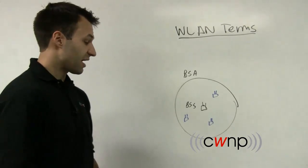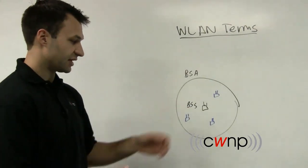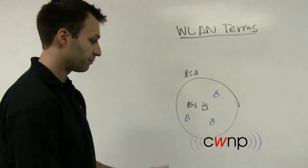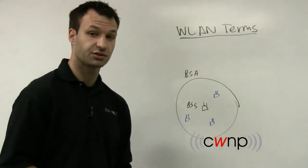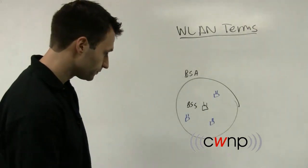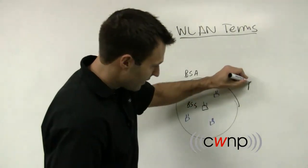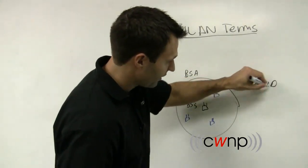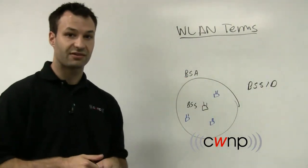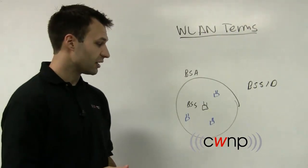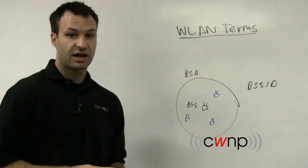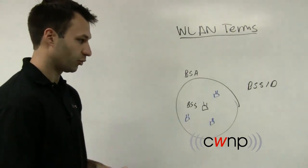Now moving on from there, each basic service set is identified by a BSS ID, a basic service set identifier. Now the basic service set identifier is in the same format as a MAC address. In fact, most basic service set identifiers are the actual MAC address of the access point.